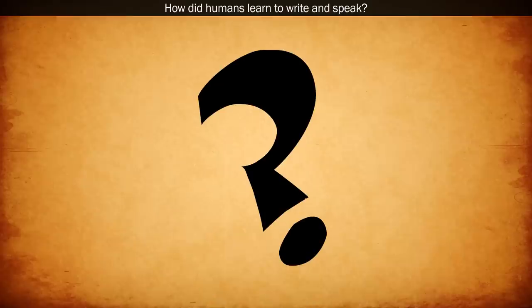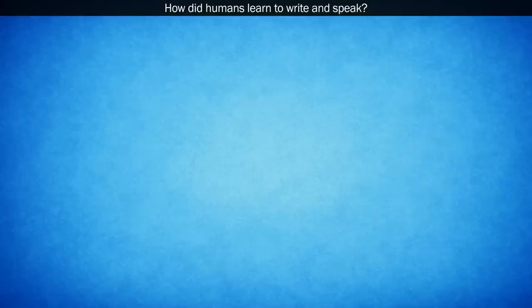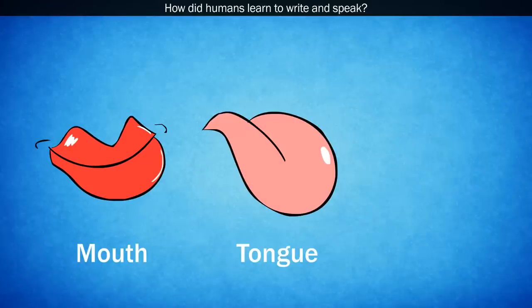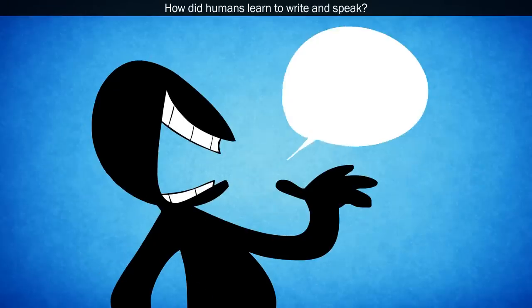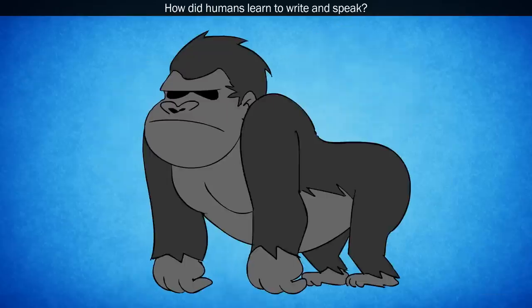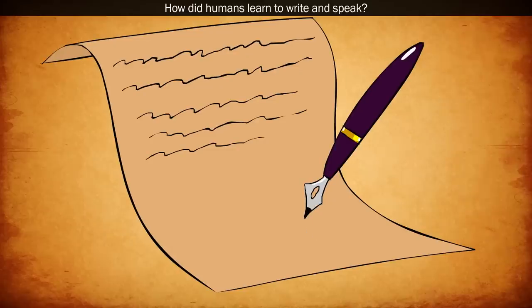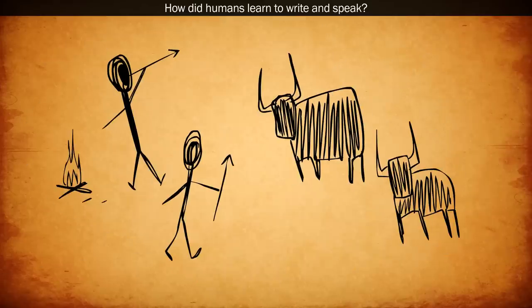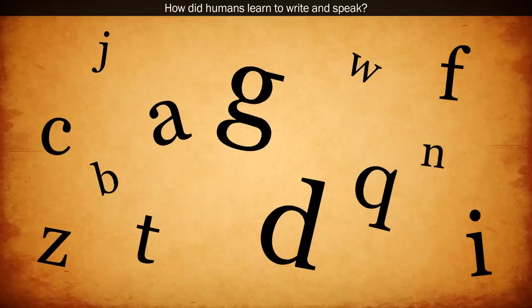Well, the exact origins of human language are still in debate but evidence suggests that thanks to the shape of our mouth, tongue, and throat, humans are able to develop a more advanced way of communicating with each other compared to other hominids. Written language later began as a way to record events using images, eventually becoming symbols that represented the sound of speech.